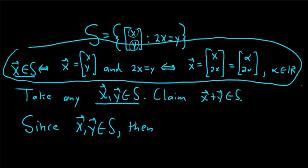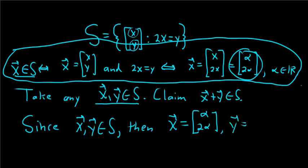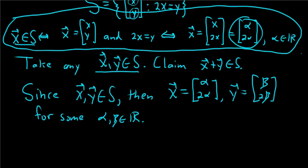We said that if X is in S, then X is of this form here. So then X is of the form [alpha, 2alpha], and Y is of the form [beta, 2beta] for some alpha, beta real numbers, right? So that's what it means for X,Y to be in S. Now we have to look at the sum and show that that is in S.